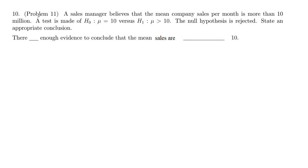This example is like problem 11 in the exam review. We have a sales manager who believes that mean company sales per month are more than 10 million. So we make a test. The null hypothesis is that the mean is 10, and the alternative is that the mean is greater than 10.